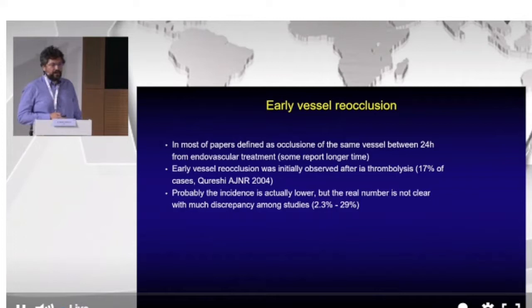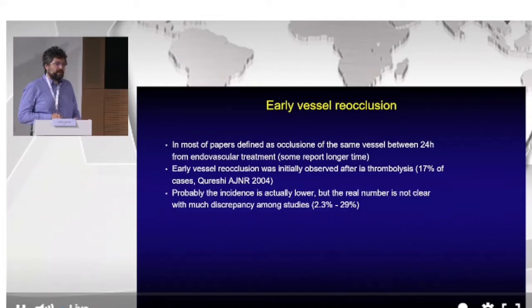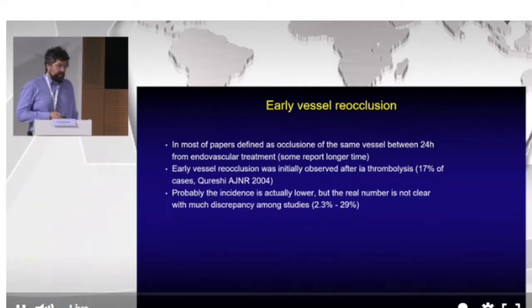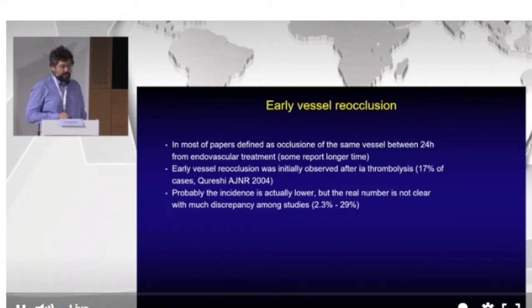It's not very easy to define early reocclusion because the timing is not well defined in most papers. Early reocclusion is defined as reocclusion of the same vessel within 24 hours in some papers, but in others it extends to three days. In older papers on intra-arterial thrombolysis, before the thrombectomy devices era, the incidence was as high as 70%.